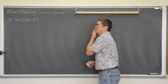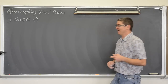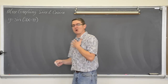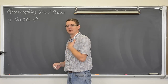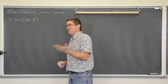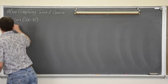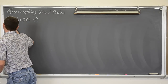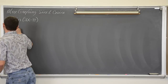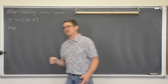We have y equals sine of 2x minus pi. This is how I am going to have my kids do these, so hopefully you appreciate this and it works for you. We are going to list off all the information that we know about this graph, make a t-table and sketch it.